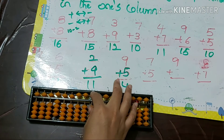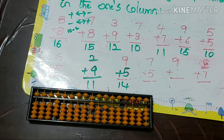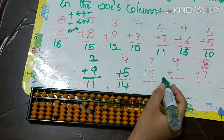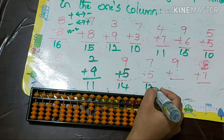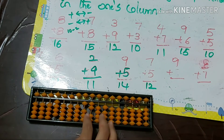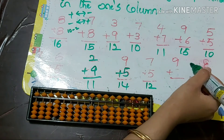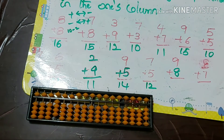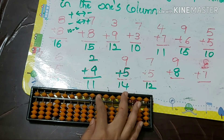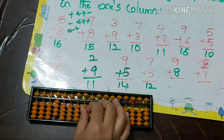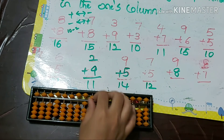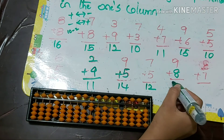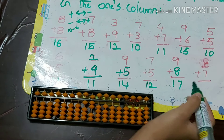Next: 7 plus 5. Plus 5 means +10 minus 5, so the answer is 12. Then 9 plus 8: using +10 minus 2, the answer is 17. Next: 8 plus 7, using +10 minus 3, the answer is 15.